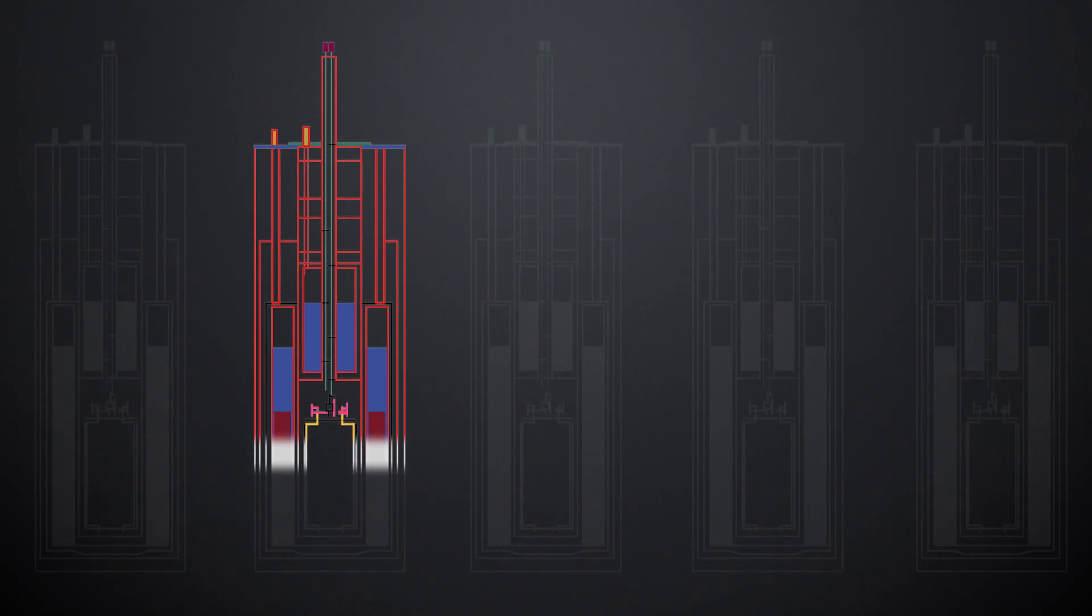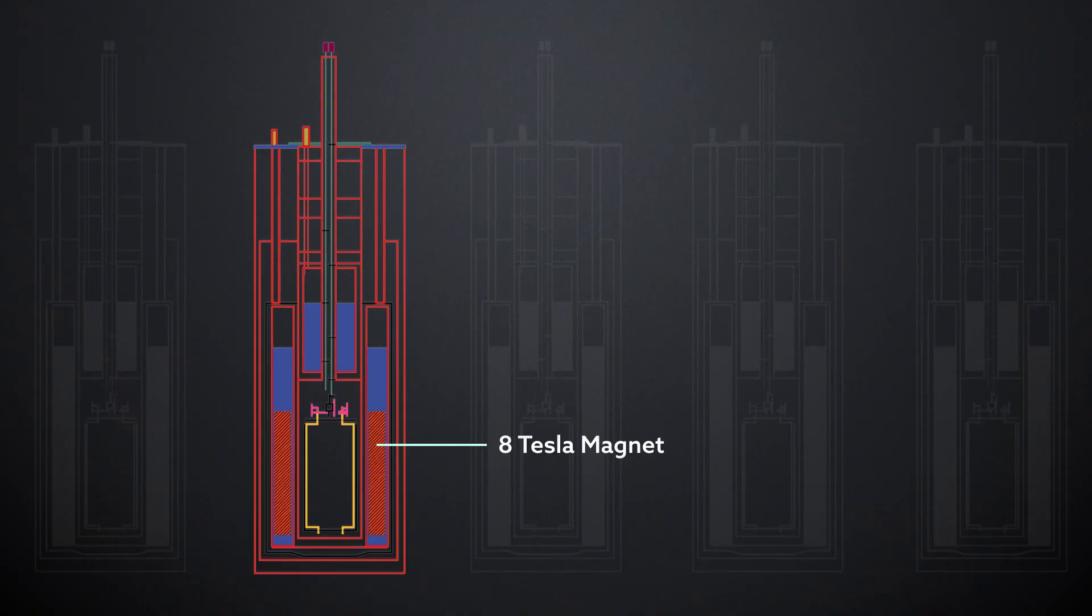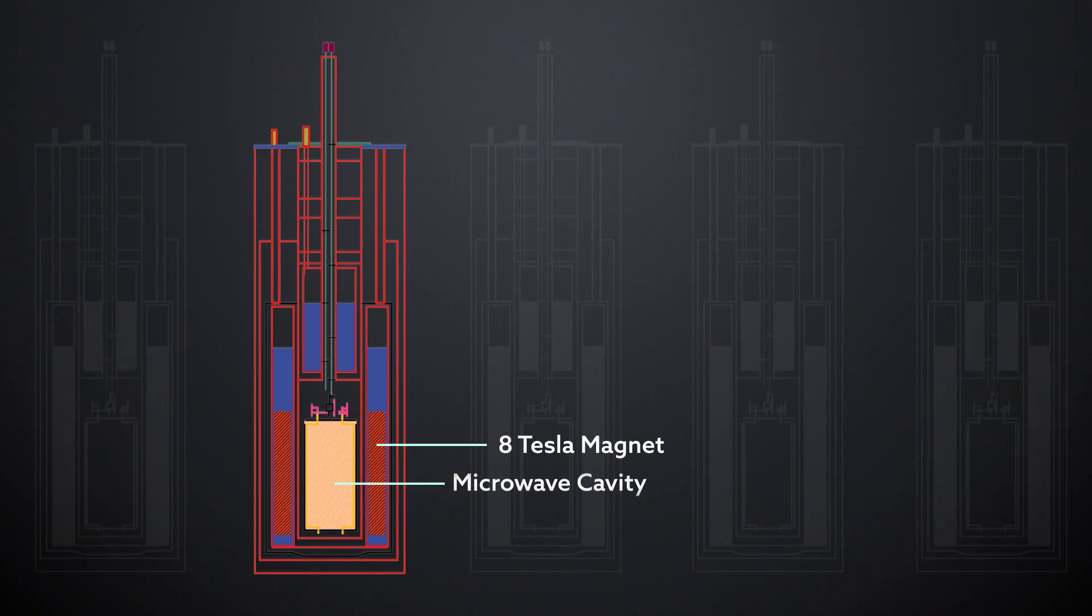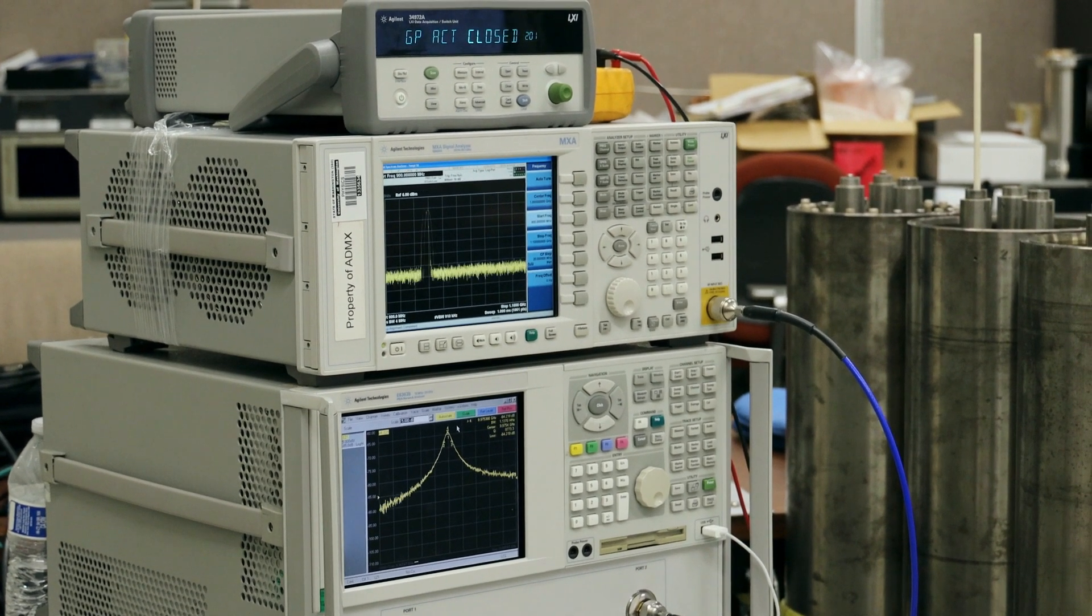The equipment we're using is the axion dark matter experiment. So we have an eight Tesla magnet. It's located at the University of Washington. It was actually started here in the lab many years ago. We have a microwave cavity, and that resonant cavity stimulates the conversion of these axions to detectable microwaves.